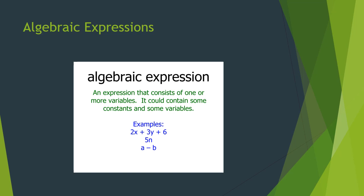Algebraic expression: a combination of numbers and variables resulting from one or more of the operations of addition, subtraction, multiplication and division is called an algebraic expression. An expression consists of one or more variables; it can contain some constants and some variables. For example, 2x plus 3y plus 6, 5n, and a minus b are all algebraic expressions.